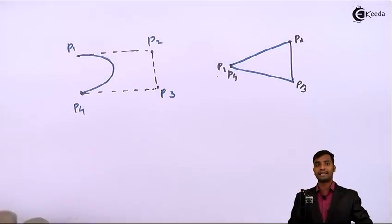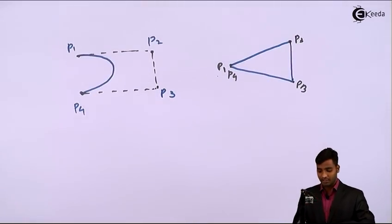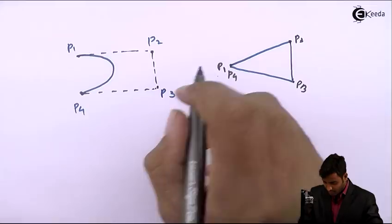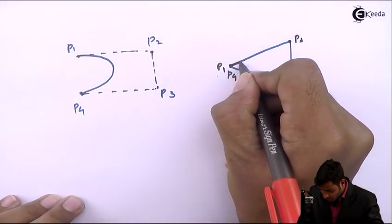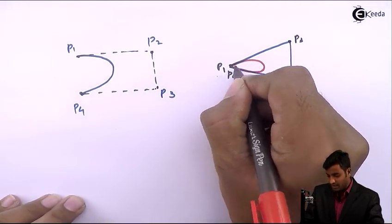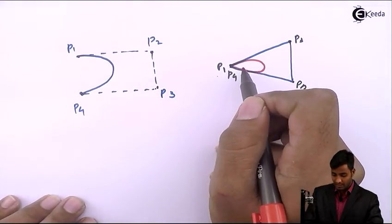For generating Bezier curve, we start from the first control point and end at the fourth control point. You can see here that the curve is closed.